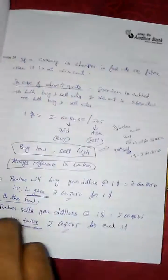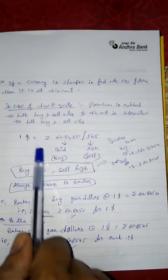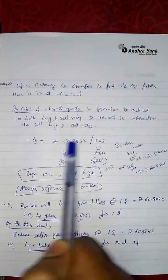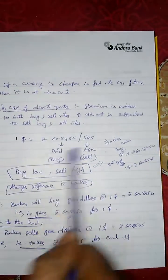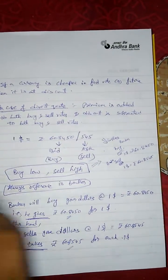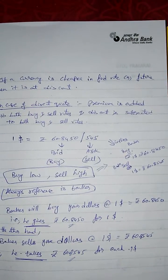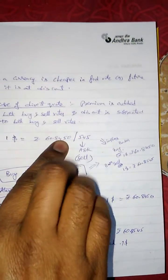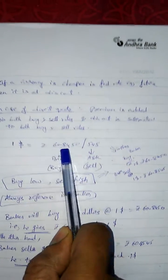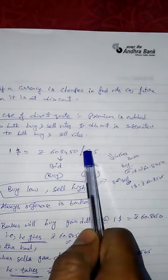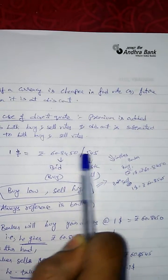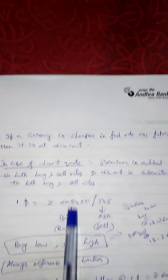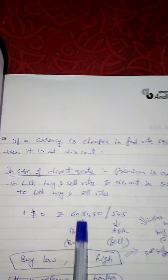Normally we express a foreign exchange quote this way: one dollar is rupee 60.8450 slash 5445. This is the format in which we get questions in the exam. One dollar equals rupee 60.8450 slash rupee 60.8545 — these decimals will be filled in accordingly. The first part is called bid rate or buy rate, that is the rate at which we buy the currency.